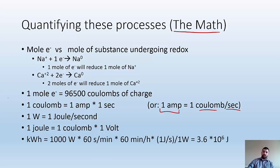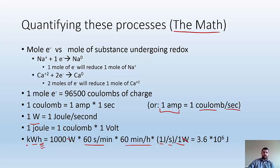We're also going to talk about kilowatt hours — that's 1,000 watts for one hour. To convert to joules: 1,000 watts times 60 seconds per minute times 60 minutes per hour, and since one watt is one joule per second, seconds cancel out, minutes cancel out, and you're left with joules. So one kilowatt hour is 3.6 times 10 to the 6 joules.